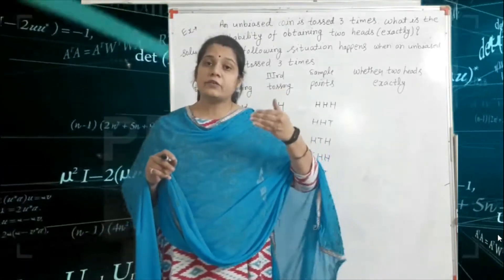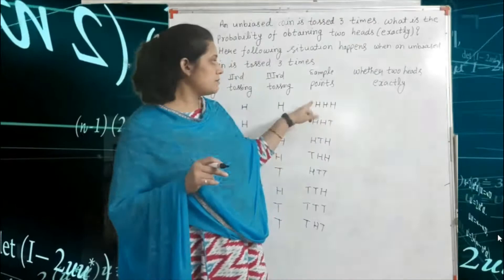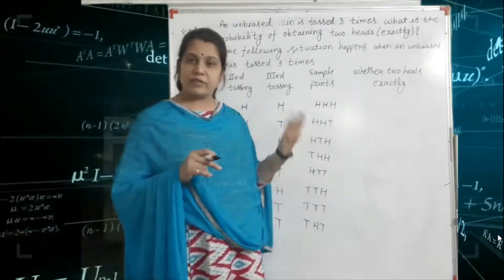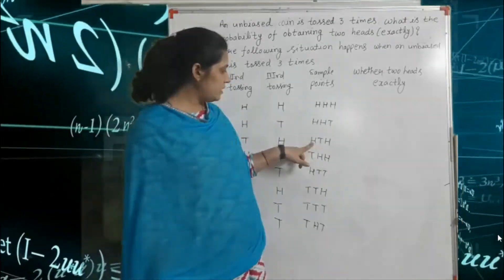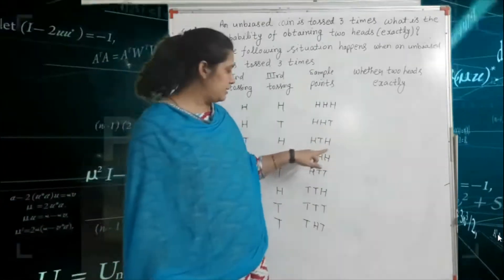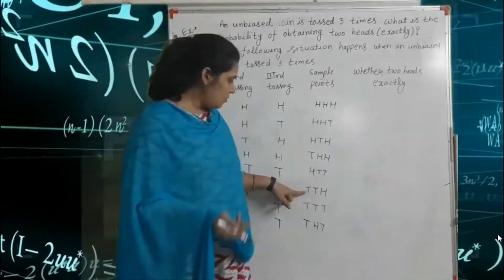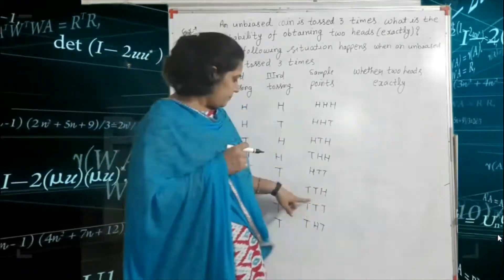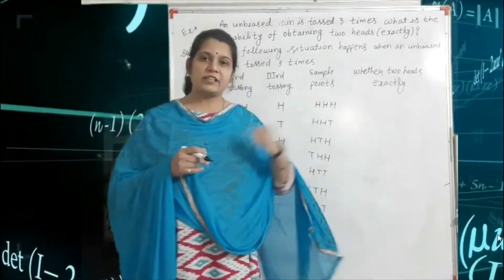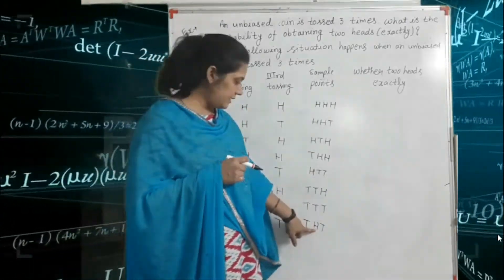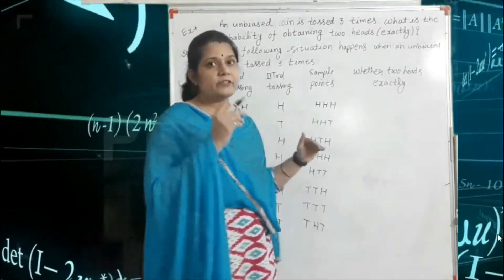Or we can say three coins tossed one time. So this is the combination: all three times head, two times head one time tail, one time head two times tail, all three times tail — that makes eight sample points in total when a coin is tossed three times.